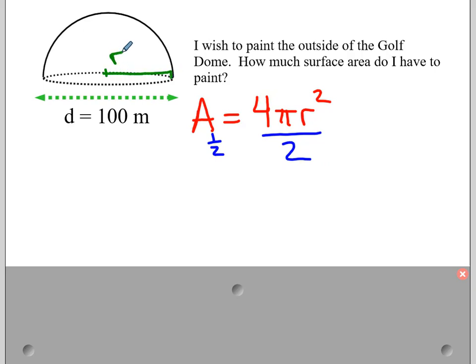And then it's just a matter of plugging everything into the expression. So this is half the area, so 4 divided by 2 is 2. I have my π value, and then my radius is 50. And if I square that, 2 times 3.14 times 50 squared.